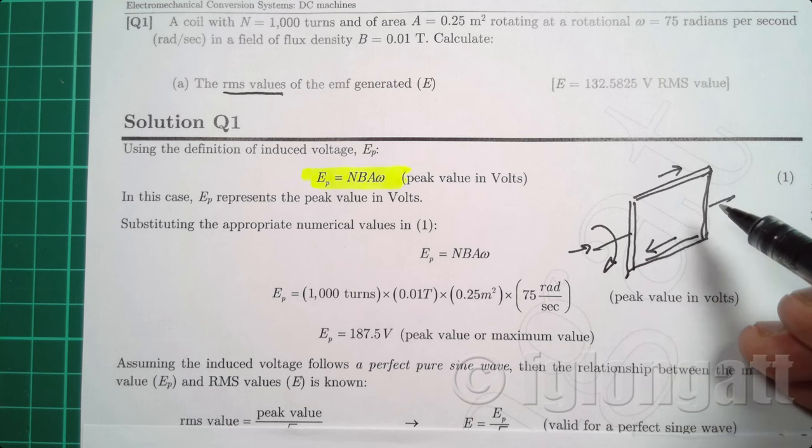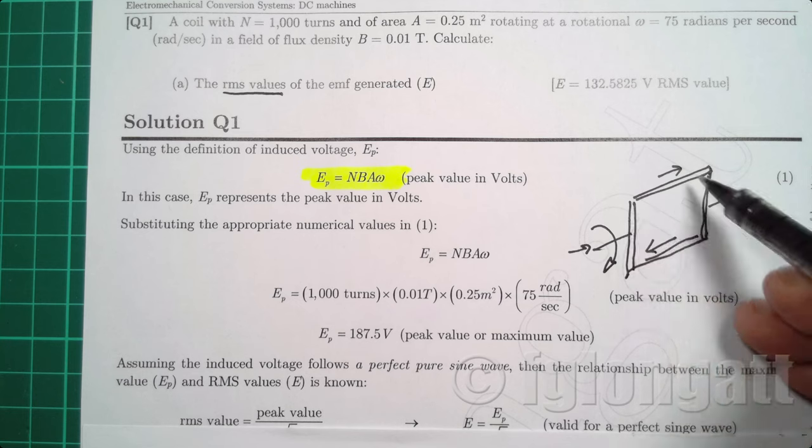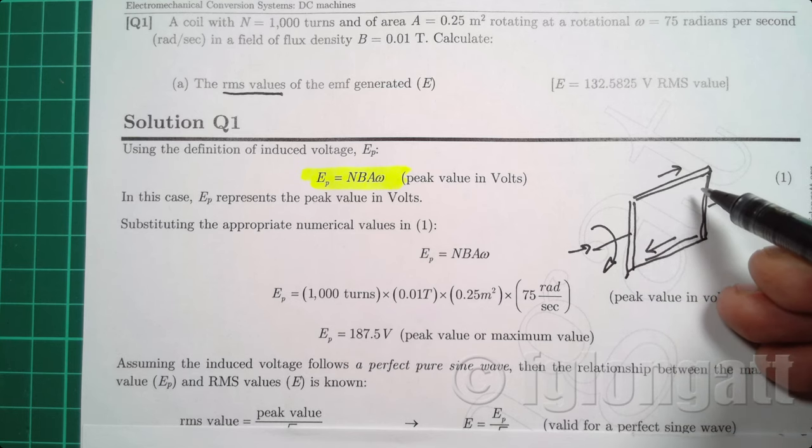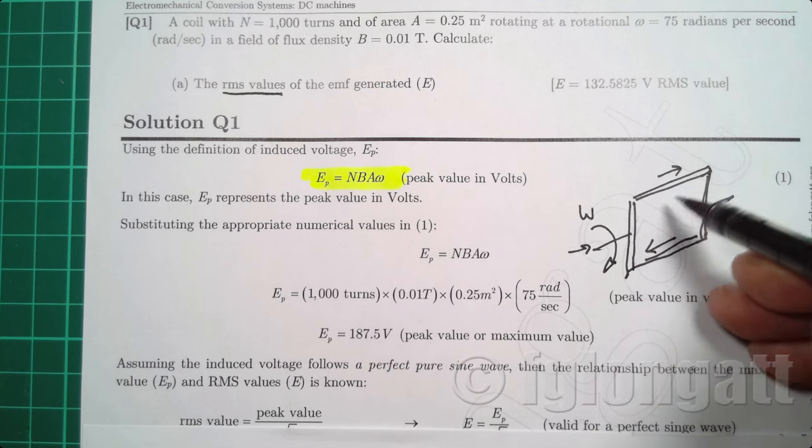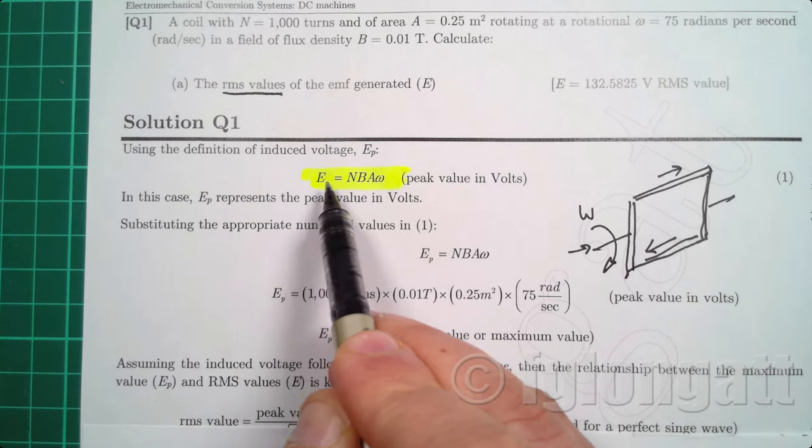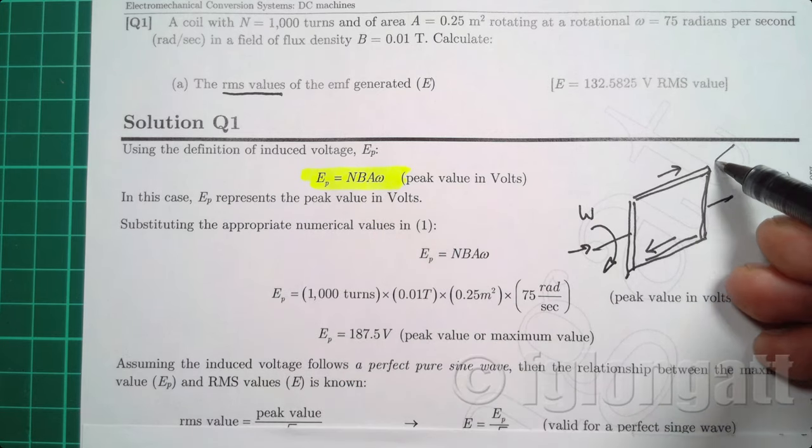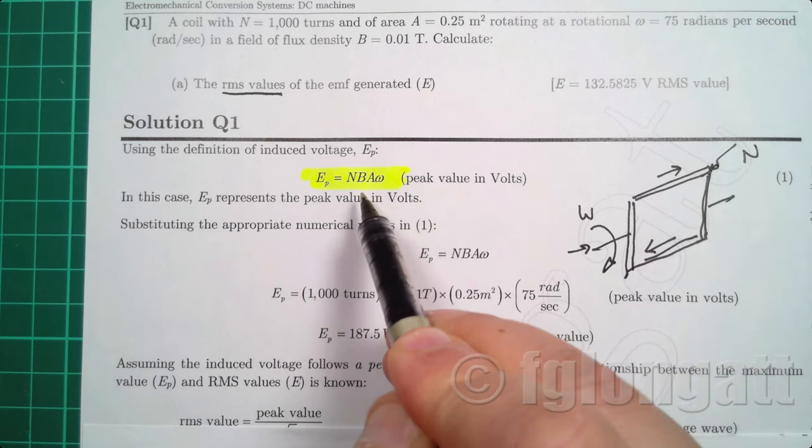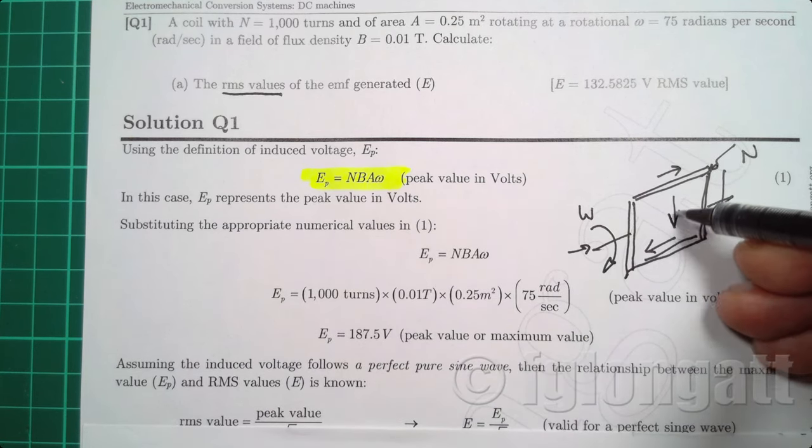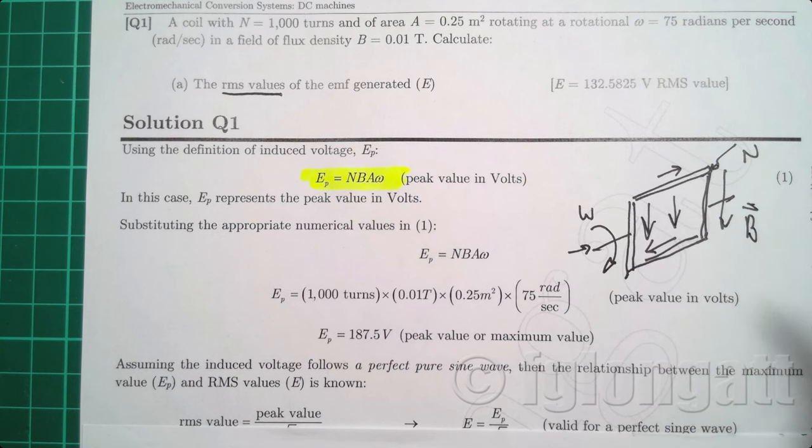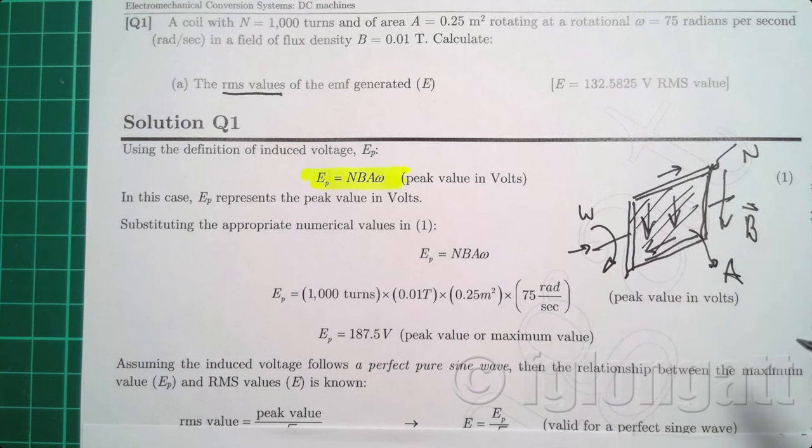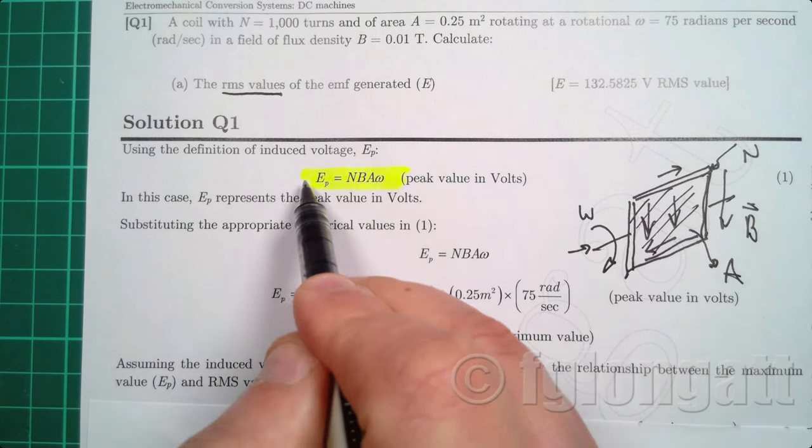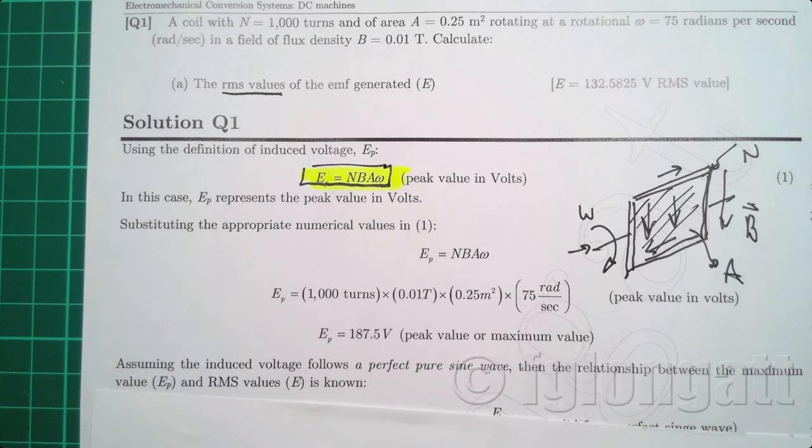So now the question here is, we want to know what is the induced voltage. And the induced voltage depends on the number of turns, the number of turns that we have here on the coil, the magnetic flux density, if we have here some magnetic flux density, the cross section area, and you can imagine here this is the cross section area, and finally the rotational speed. So this equation is extremely important for you.